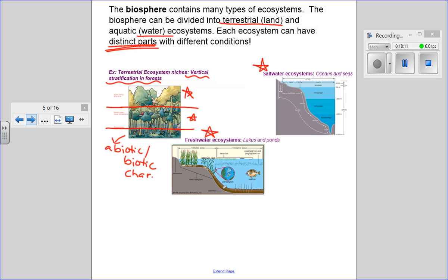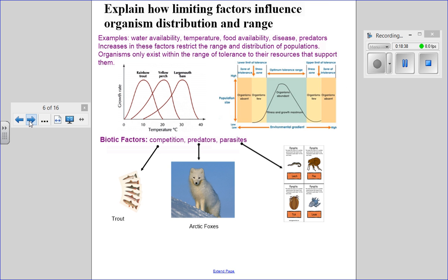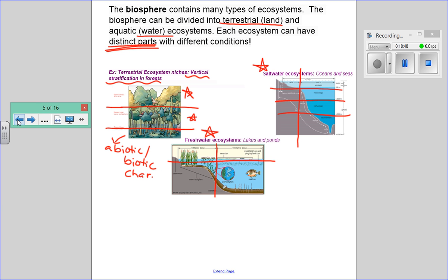The same is true in water ecosystems. If we take a look at depth and proximity to shore, there are distinct regions in an ocean ecosystem. The same is true for freshwater—how deep and how close to shore gives different characteristics because of the biotic and abiotic factors that exist there. And that's it for today.